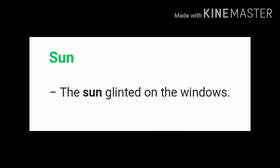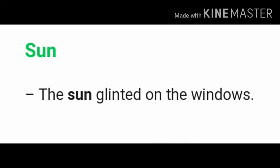Moving on, we can have this line: 'The sun glinted on the windows.' Maybe this is a new word for you — glinted. You have been saying the sun is shining bright on the windows, or the sun shone brightly on the windows, or sparkling bright. So 'the sun glinted on the windows' — glinted is a new word here.